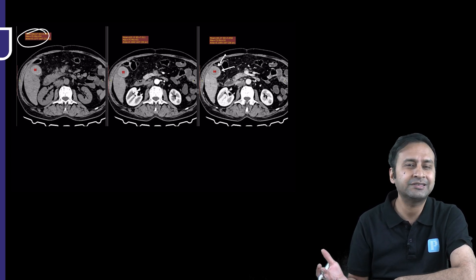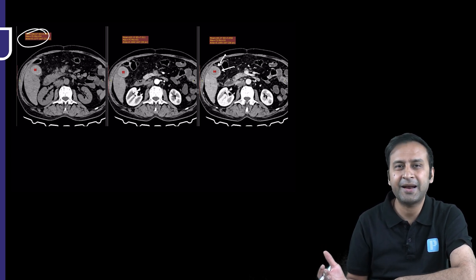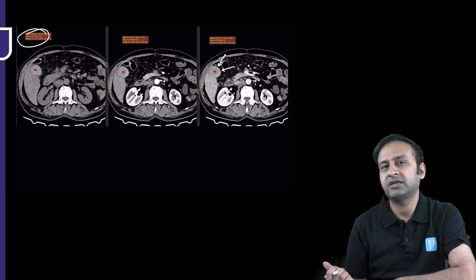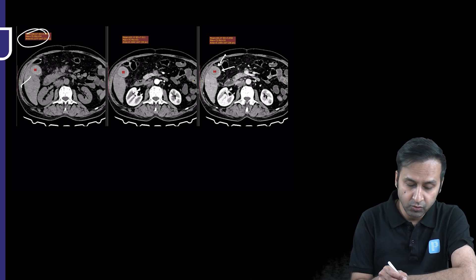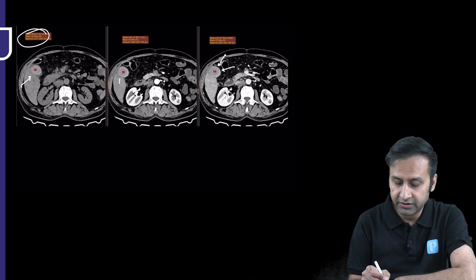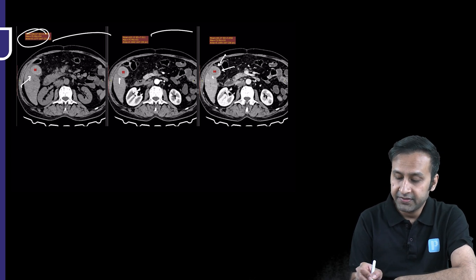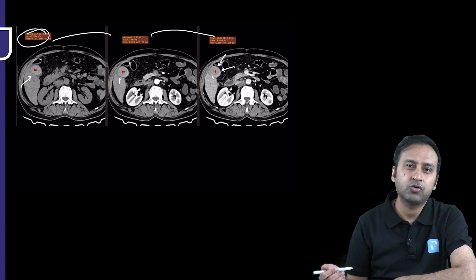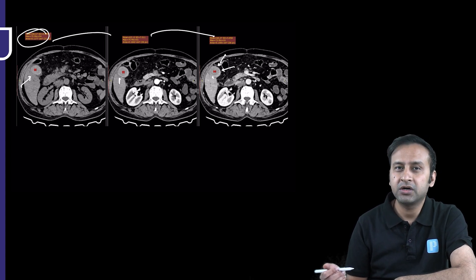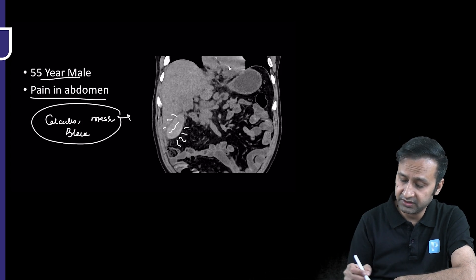In day-to-day CT reporting practice, we tend to look at the contrast study first. I initially thought I was dealing with a mass. But when I looked at the non-contrast phase and compared the densities, they were found to be identical across phases. This was a non-enhancing structure seen throughout the gallbladder lumen.